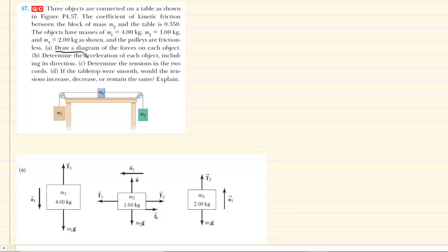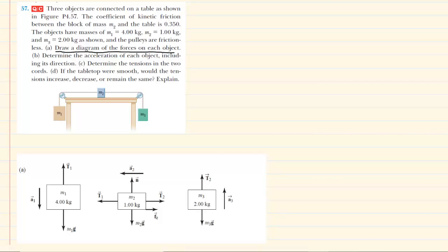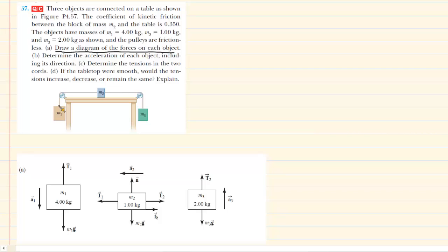In part A of the question, we are asked to draw a diagram of the forces on each object — essentially, a free body diagram for each object. Let's begin with the mass labeled M1. There are going to be two forces acting on that mass: the gravitational force pulling downward, labeled M1g, and because M1 is attached to a rope, a tension force pulling up on that mass. Those are the only two forces.